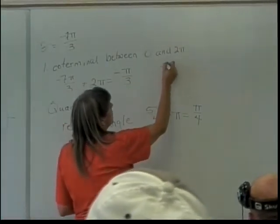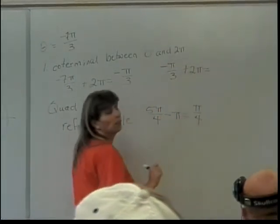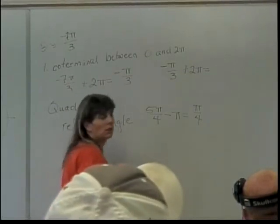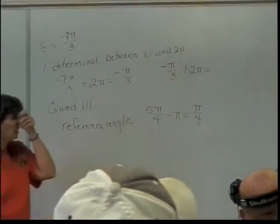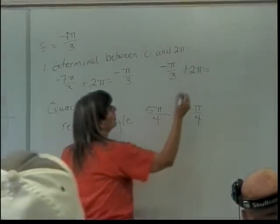So I'll take my negative pi over 3, add another 2 pi. This one will get me where? To 1 pi? No, to 2 over 3. 6? 5 pi over 3.